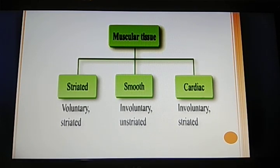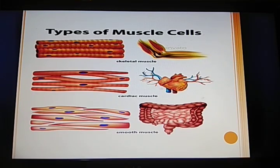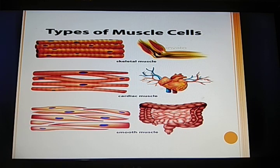We will see the next tissue — muscular tissue. It is of three categories: striated, smooth, and cardiac. Striated muscles are voluntary in nature, meaning they are under our control. Smooth muscles are involuntary, and cardiac is also involuntary. Skeletal muscle, the voluntary muscle, is normally found in the outer part of our body in the bicep and tricep. Looking at the picture, bands and nucleus are present. Smooth muscles are spindle-shaped and involuntary, found in internal organs like the bladder and intestine.